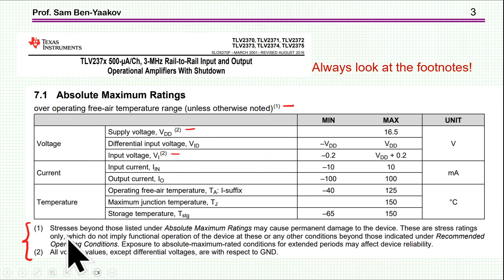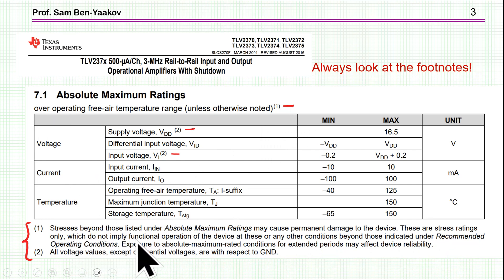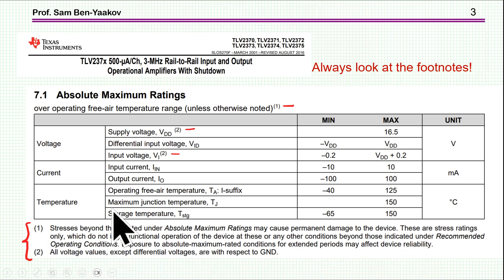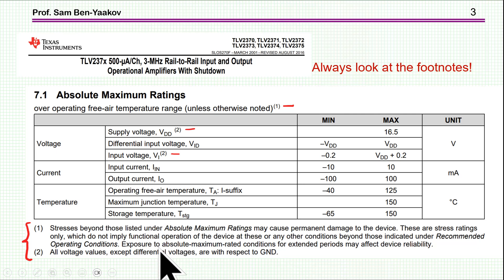Footnote 1 says: stresses beyond those listed under Absolute Maximum Ratings may cause permanent damage to the device. These are stress ratings only, which do not imply functional operation of the device at these or any other condition beyond those indicated under recommended operating conditions. These are not operating point parameters — these are values that you should not exceed in order not to damage the unit. The damage could be immediate, or exposure to Absolute Maximum Rated conditions for extended periods may affect device reliability, causing the device to deteriorate, break down, and malfunction.